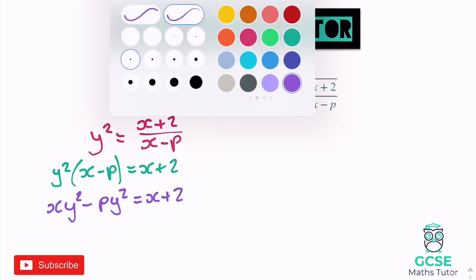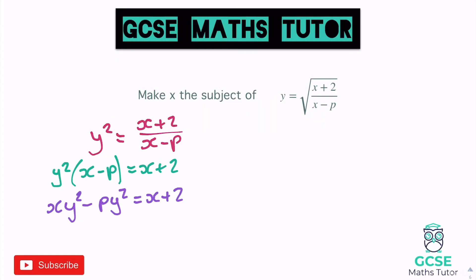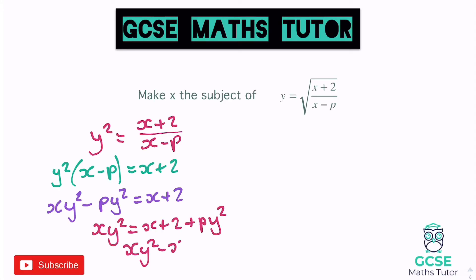Now we can start getting the x's on the same side. I'm going to add the py squared over to get rid of that minus. So xy squared equals x plus 2 plus py squared. Now we can minus the x over. So xy squared minus x equals 2 plus py squared.